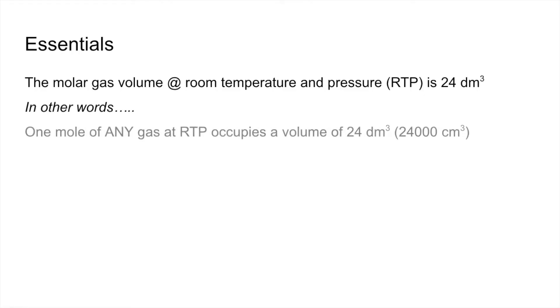In other words, one mole of any gas at RTP occupies a volume of 24 dm³, which is equivalent to 24,000 centimeters cubed. The formula triangle that we use for this type of calculation is on the screen now.